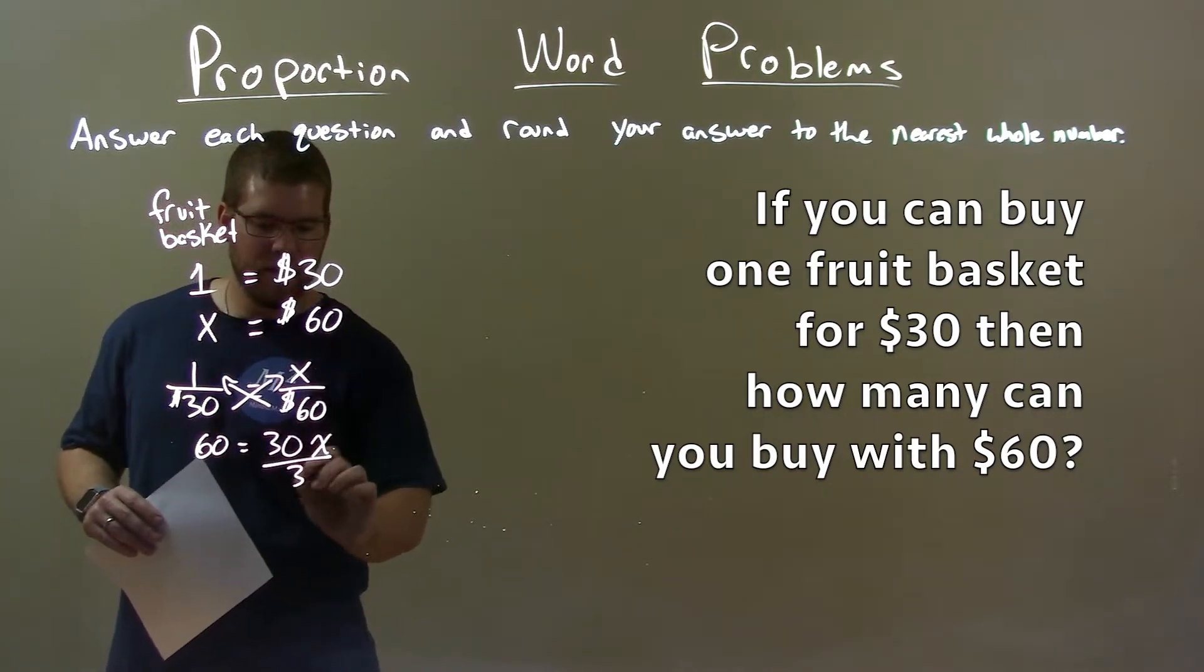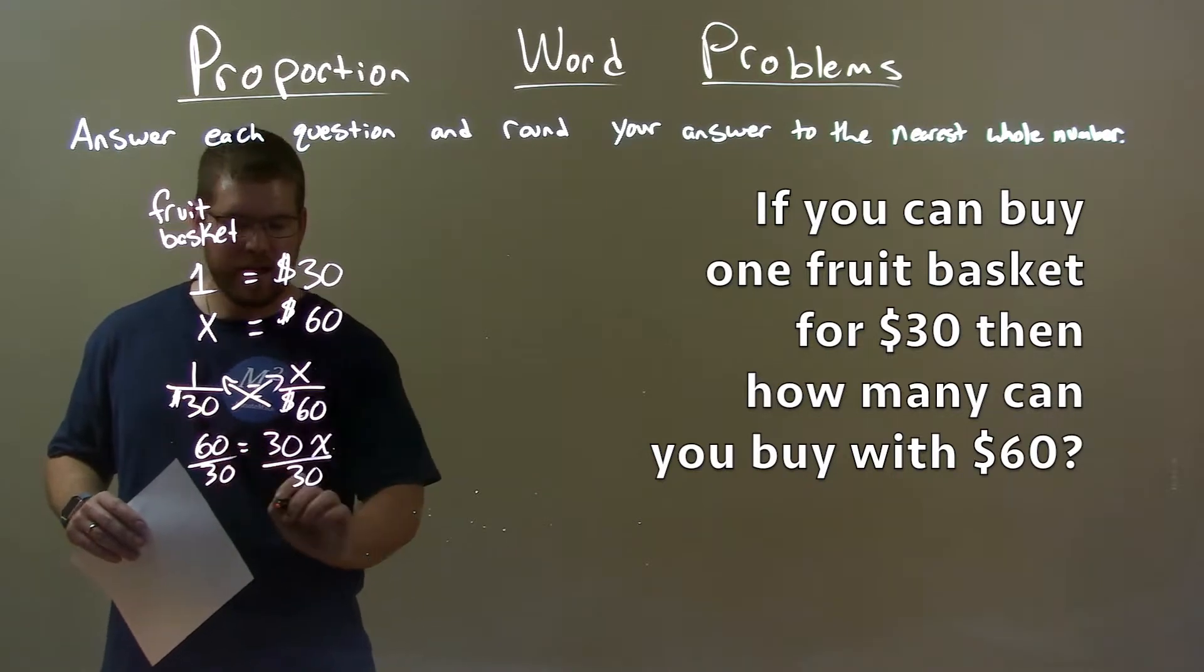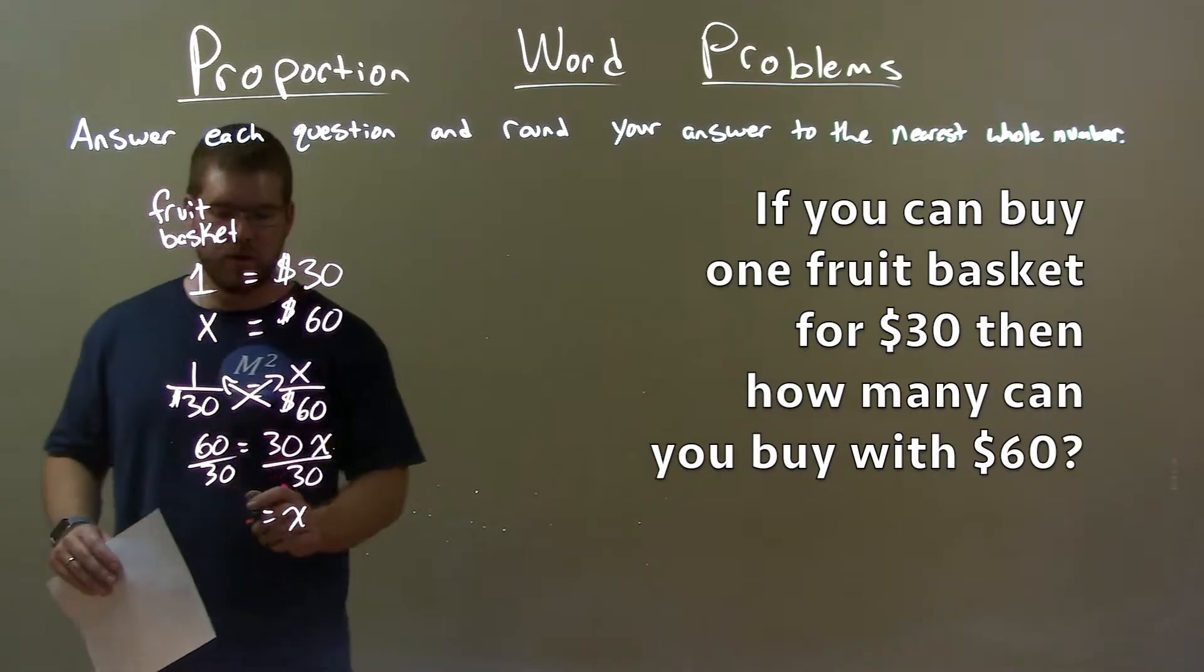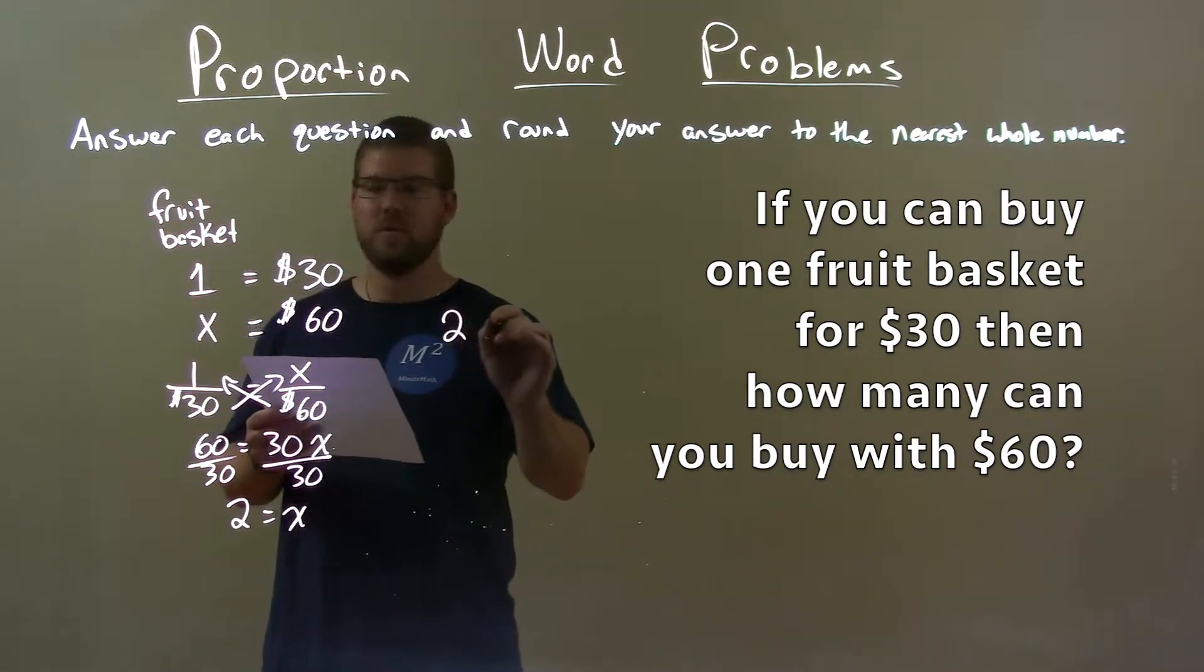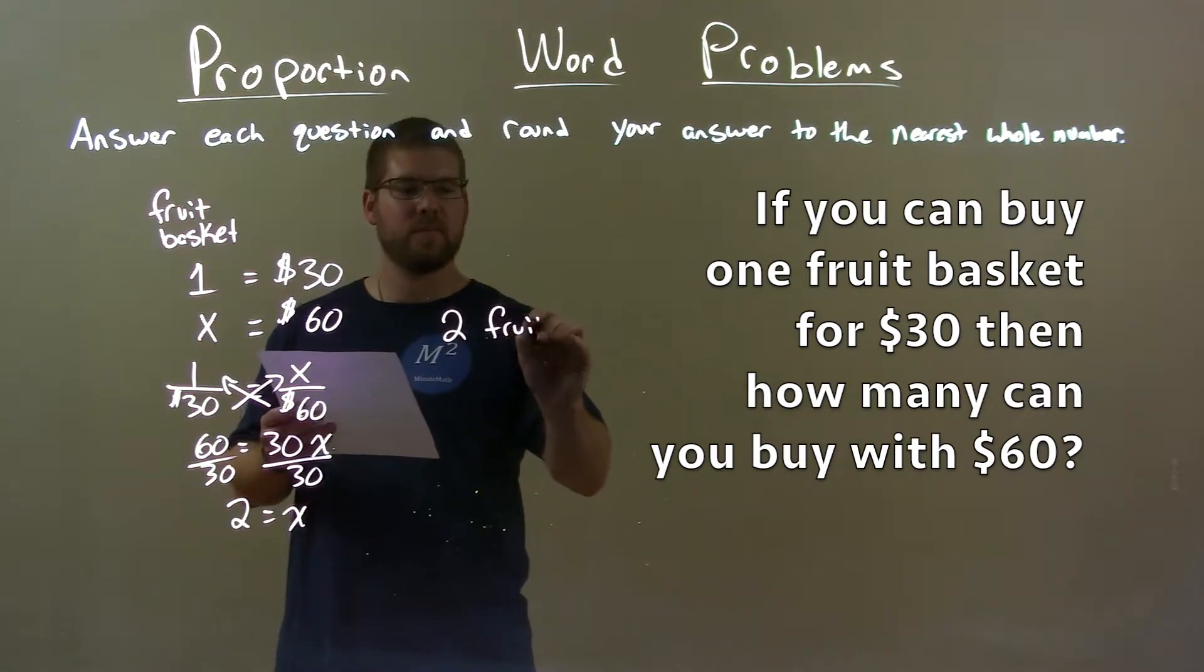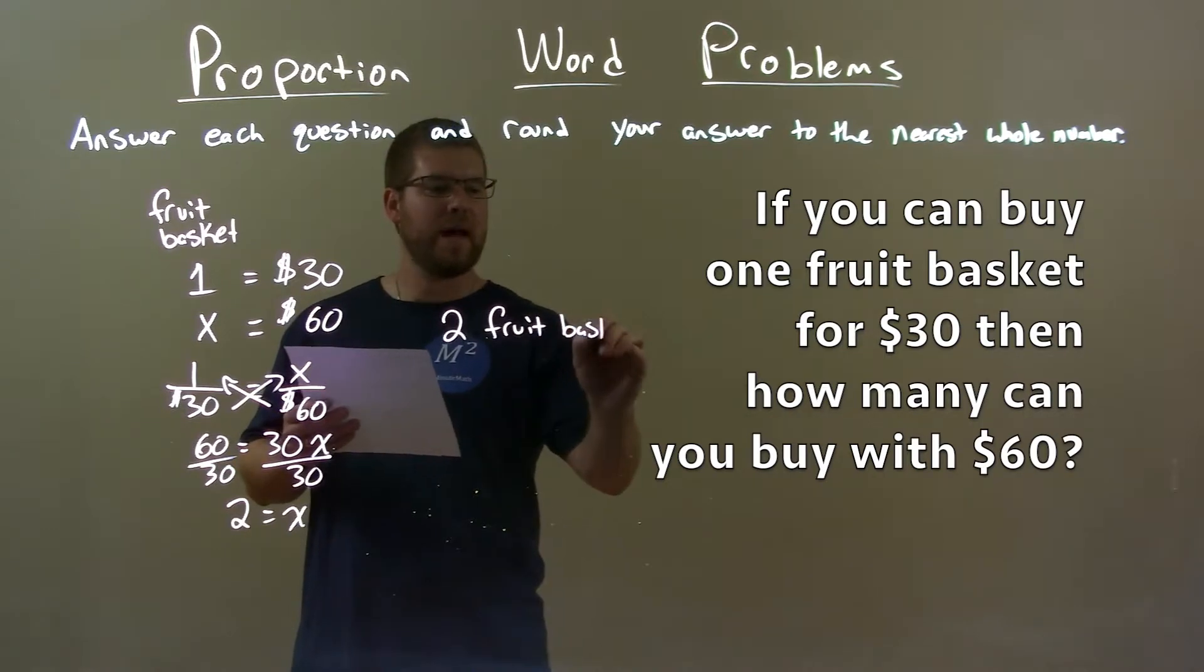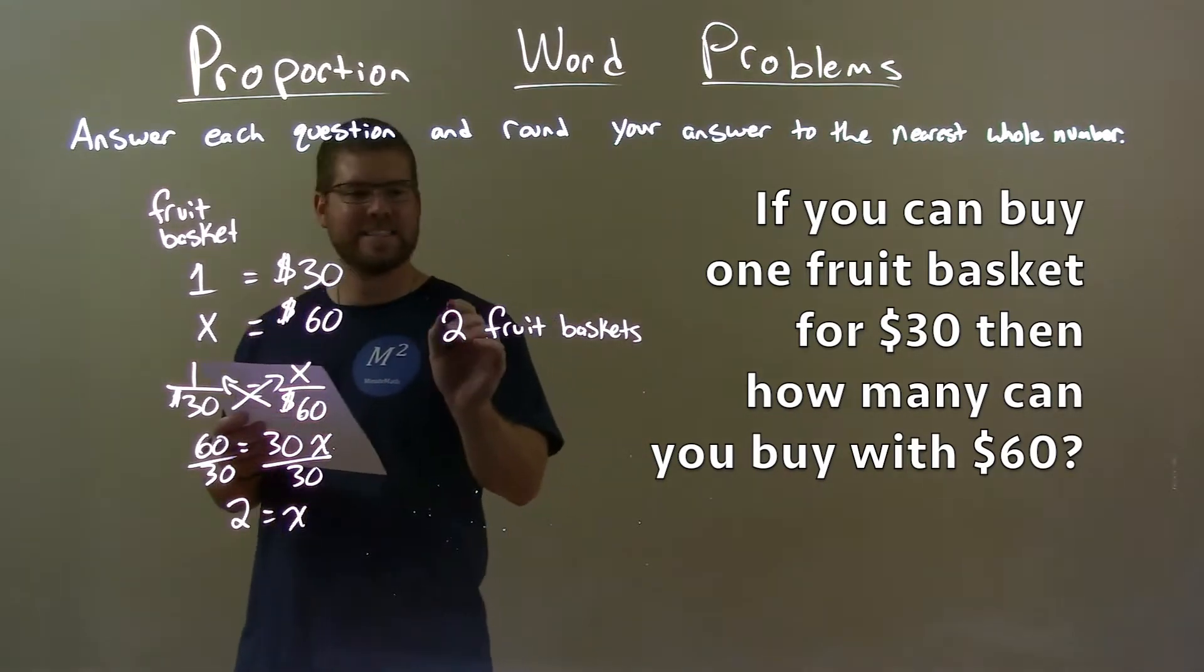We then divide by 30 on both sides to get x by itself. 60 divided by 30 is 2. And so our final answer here is 2 fruit baskets are what we can get if we spend $60.